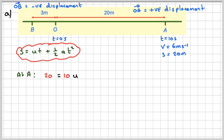So it's going to be 10U plus half of A times 10 squared, which will give me 10U and a half of 100 is 50. So 10U plus 50A equals 20.